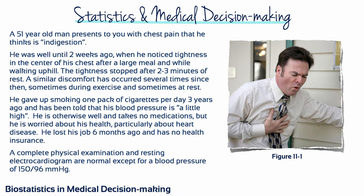Diagnosis is an imperfect process, resulting in a probability rather than a certainty of being right. The doctor's certainty or uncertainty about a diagnosis has been expressed by using terms such as 'rule out' or 'possible' before a clinical diagnosis. That being the case, clinicians should be familiar with the mathematical relationships between the properties of diagnostic tests and the information they yield in various clinical situations.